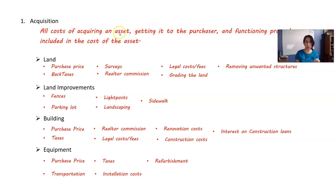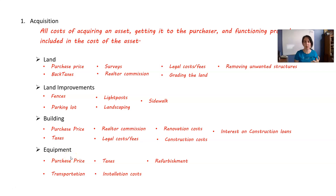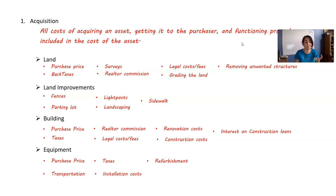Remember the sentence: all costs of acquiring the asset, getting it to the purchaser, and functioning properly are included in the cost of the asset. One other thing with equipment: if you plug in a piece of equipment for the first time and it's producing something, it's probably not going to produce it perfectly at first — you'll have to calibrate the machine. So you're probably going to waste some product along the way, and that scrap material gets added into the cost of the equipment, because it's everything to get it to you and working properly.